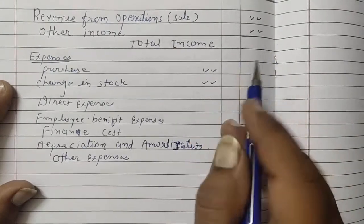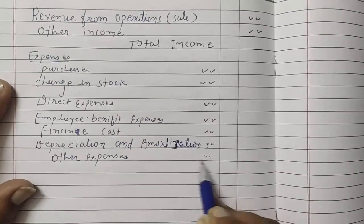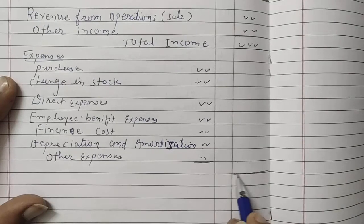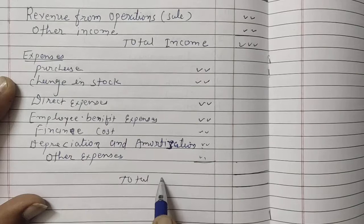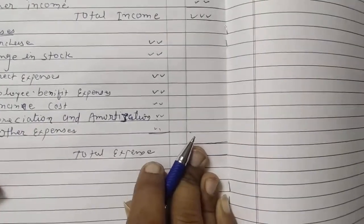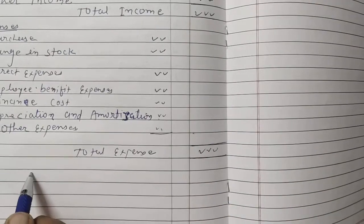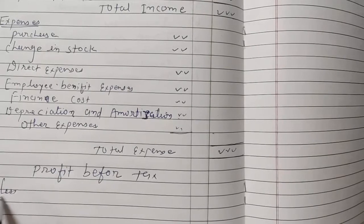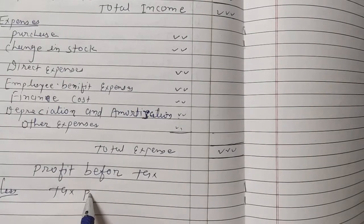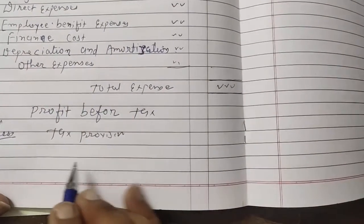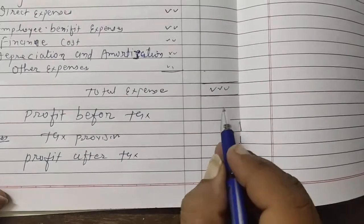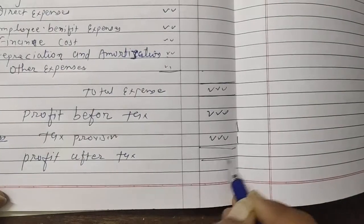Purchase and Change in Stock are recorded in the inner column. Two columns are prepared and totalled. Total Income is recorded here, and Total Expenditure here. Total Income minus Total Expenses gives the difference — Profit Before Tax. Less tax provision gives Profit After Tax. That is the profit and loss account.